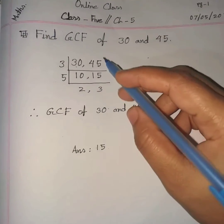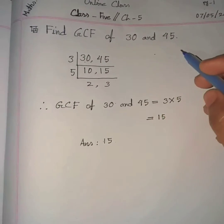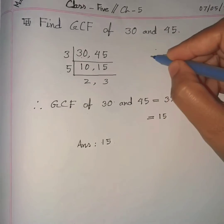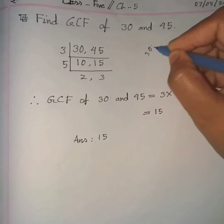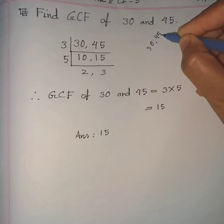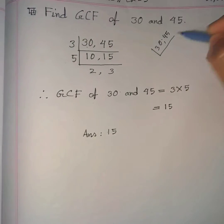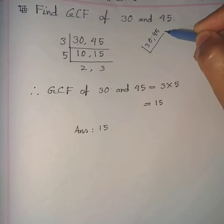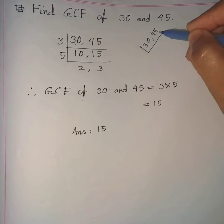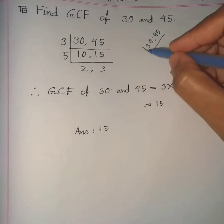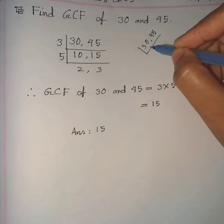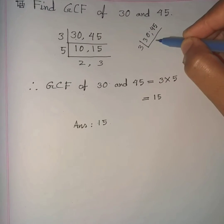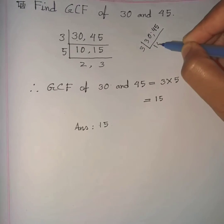We have to find the GCF of 30 and 45. First of all, write them: 30 and 45. Then we have to divide 30 and 45 by common prime factors. 3 is a common prime factor of 30 and 45, so dividing 30 by 3 we get 10.